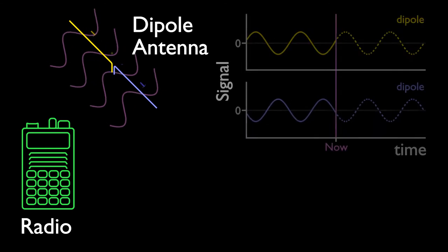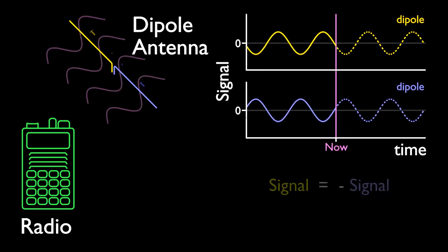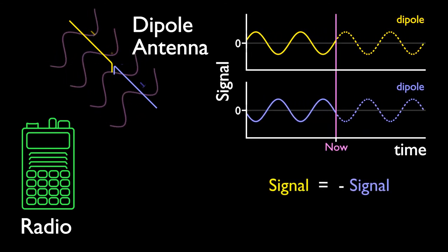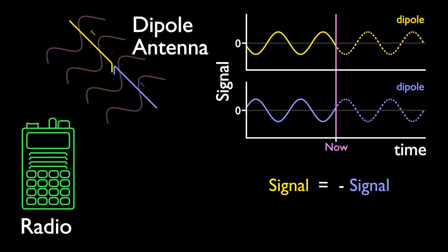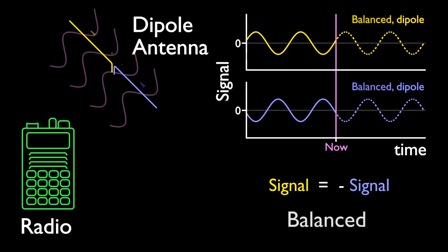The signals at the feedpoint nodes are in the opposite phase. Such a pair of signals in the opposite phase is called a balanced signal.